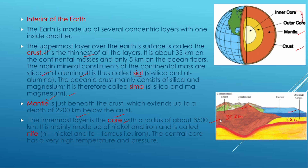The innermost layer is the core, and its main constituents are nickel and iron. Iron is also called ferrous, so the core is called NIFE — NI for nickel and FE for ferrous (iron). The central core has very high temperature and pressure, and it is always in a liquid state.